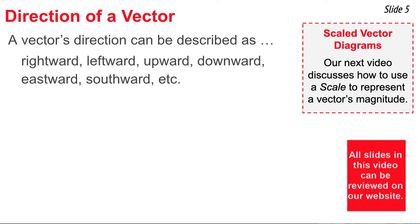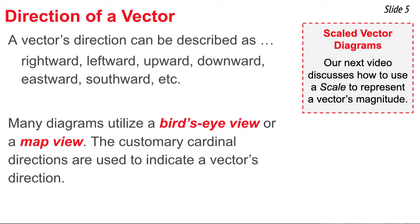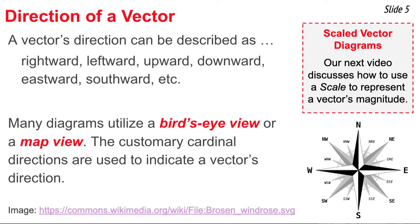A vector's direction can be described as being right or left or up or down, north, south, east, or west. We often utilize a bird's-eye view of a situation for a diagram. In such a case, we use the usual cardinal directions of a compass to indicate the direction of a vector, like we describe it as being north or south, or east or west.